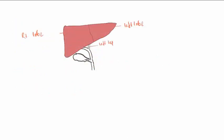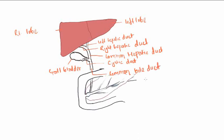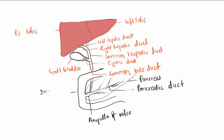Anatomy of the biliary system: left lobe and right lobe of the liver, left hepatic duct, right hepatic duct, common hepatic duct, cystic duct and gallbladder, common bile duct, pancreas and pancreatic duct, ampulla of Vater and second part of duodenum.